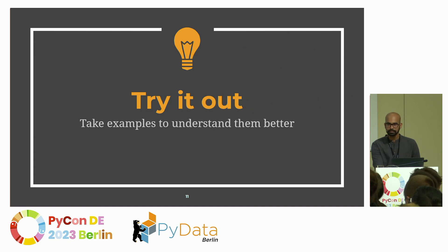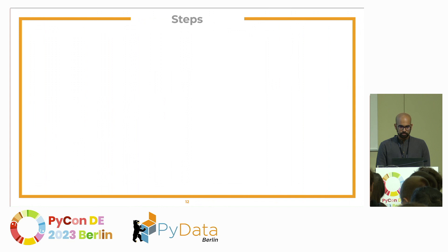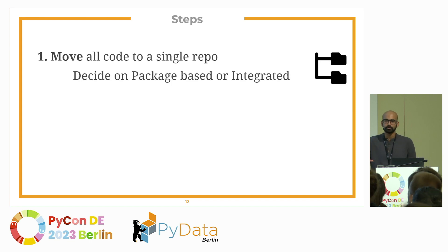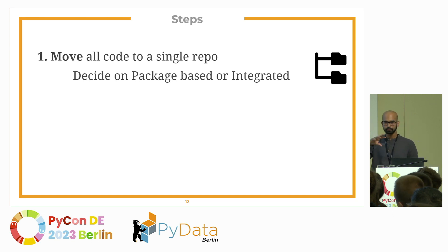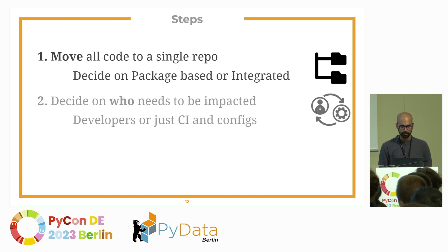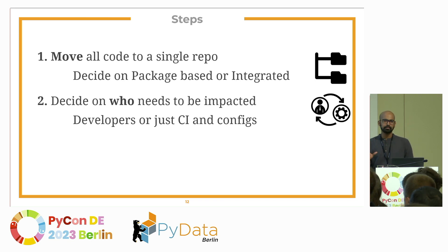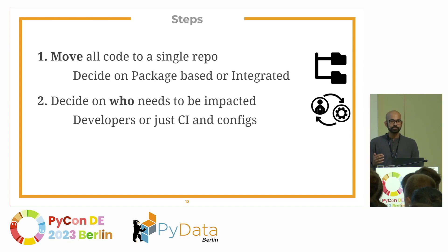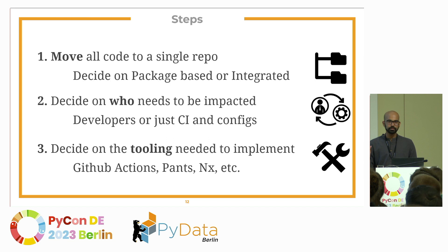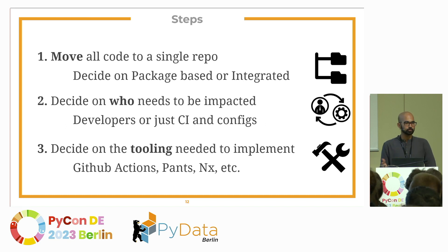The basic steps to move towards a mono repo: number one, move all your code to a single repo, or if it's already there, structure it out in the form you want for the long term. Here you decide between an integrated monorepo — everything in one folder — or multiple packages in the monorepo. Number two is who needs to be impacted: CI and developers. A lot of people say they love mono repos for CI, but their developers don't want to move — there are options for managing mono repo structure with minimal developer impact. And the last, most important consideration is the tooling required to implement this.